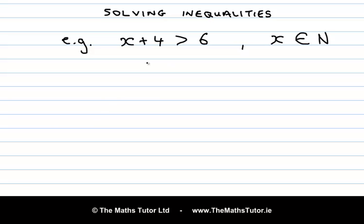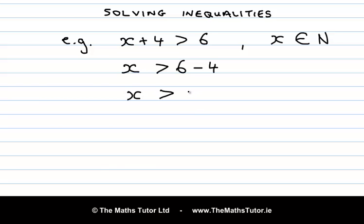So we need to solve the inequality first. We have x plus 4 on the left hand side and 6 on the right hand side. Let's get x on its own on the left hand side. x is greater than 6, and now we bring the plus 4 across the inequality symbol so it becomes minus 4. That's similar to solving a linear equation, and now x is greater than 6 minus 4, which is 2.